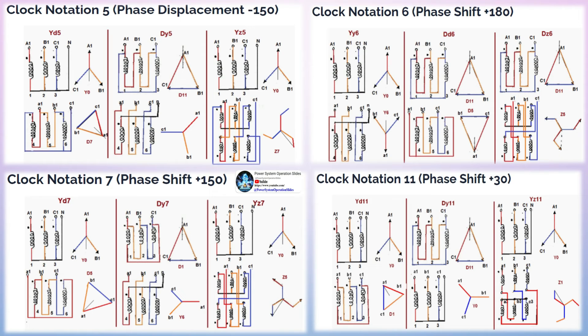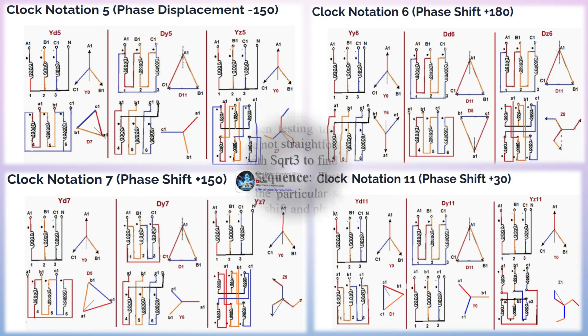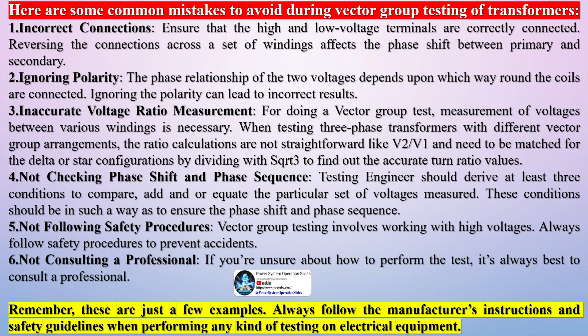Here are some safety precautions to consider when performing vector group testing on transformers. 1. Power off. Always keep the power off when working on the transformer. 2. Zero electrical leakage. Ensure there is no electrical leakage or continuity between the current source and the system.